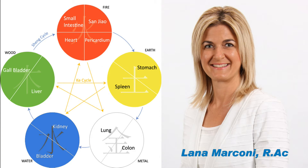In regards to the five elements theory: the element fire includes the heart and the small intestine meridians and organs; the element earth includes the spleen and stomach meridians and organs; the element metal includes the lung and large intestine meridians and organs; the element water includes the kidneys and urinary bladder meridians and organs; and the element wood includes the liver and gallbladder meridians and organs.